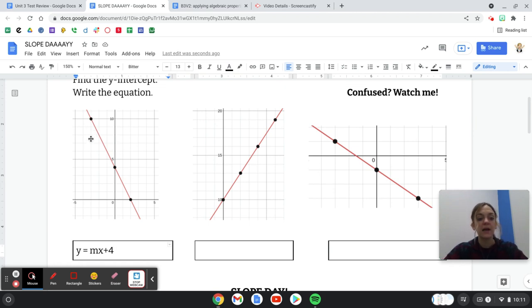Now I put these black dots on the lines for you to help make counting the slope a little bit easier. So I'm going to get rid of m, and I'm going to write my slope here.